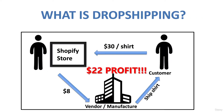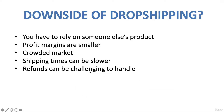Although you're selling the t-shirt for thirty dollars, you have to spend eight dollars of that to make a twenty-two dollar profit, so profit margins can be smaller than if you'd purchased products in bulk upfront. It can also be a crowded market — more and more people every day are catching on to dropshipping. But you can overcome that by spending more time finding the perfect product, being more strategic about what you sell. Don't just sell the first thing you think of — we'll go into strategies on how to find the perfect product.